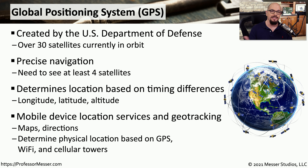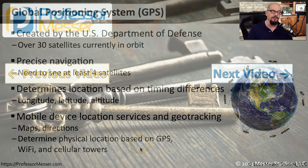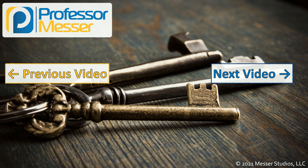We use GPS extensively on our mobile devices, commonly for maps and directions. You can also use GPS in conjunction with other types of networks to triangulate where a person might be. So your location may not only be based on GPS — there may be Wi-Fi and cellular tower triangulation as well.